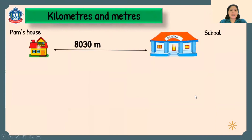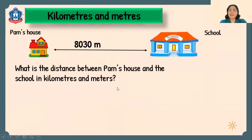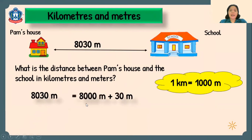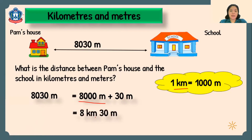Now, the distance between Pam's house and the school is 8,030 meters. What is the distance using kilometers and meters? Remember that 1 kilometer equals 1,000 meters. So 8,030 meters equals 8,000 meters plus 30 meters. Converting 8,000 meters to kilometers gives us 8 kilometers. So the distance is 8 kilometers and 30 meters. That is how we convert between kilometers and meters.